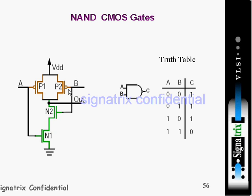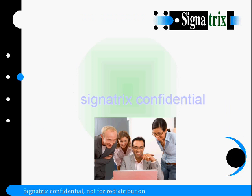When both inputs are one, both NMOS transistors are ON, so the PMOS pull-up block is not conducting. Your capacitor is discharged through the series NMOS path because both transistors are ON and the capacitor will discharge through this path. During that time you will get output as zero. That is the functionality of the NAND gate — this diagram shows how to implement a logic-level two-input NAND gate at the transistor level.